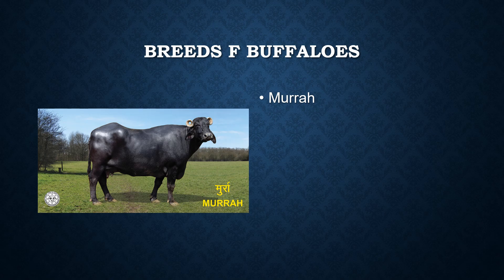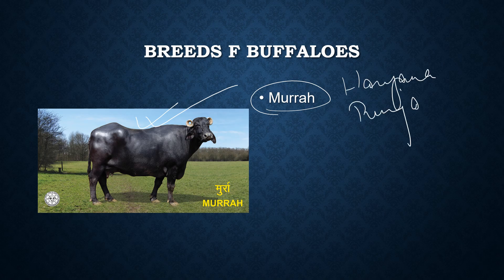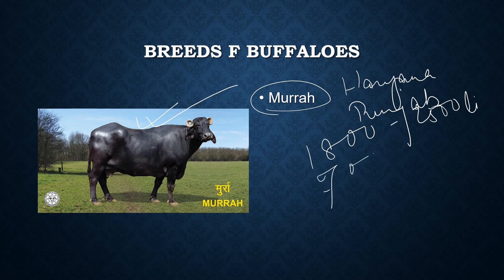The next category of milch animals is buffalos. The first buffalo breed is Murrah, mainly found in Haryana and Punjab. Their average annual milk yield is 1800 to 2500 liters and the fat content is up to 7%.